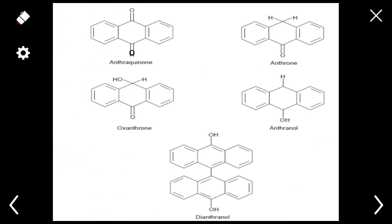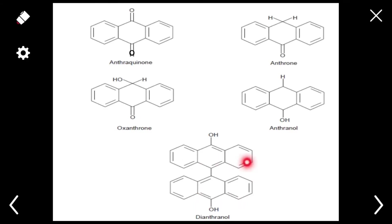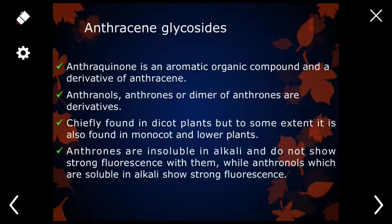Here you can see the different derivatives of anthracene: this is anthrone, this is anthraquinone, this is oxanthrone, this is anthranol, and this is dianthrone. These are two anthracene structures, and one is also called a dimer of anthracene. These are the different derivatives of anthracene.